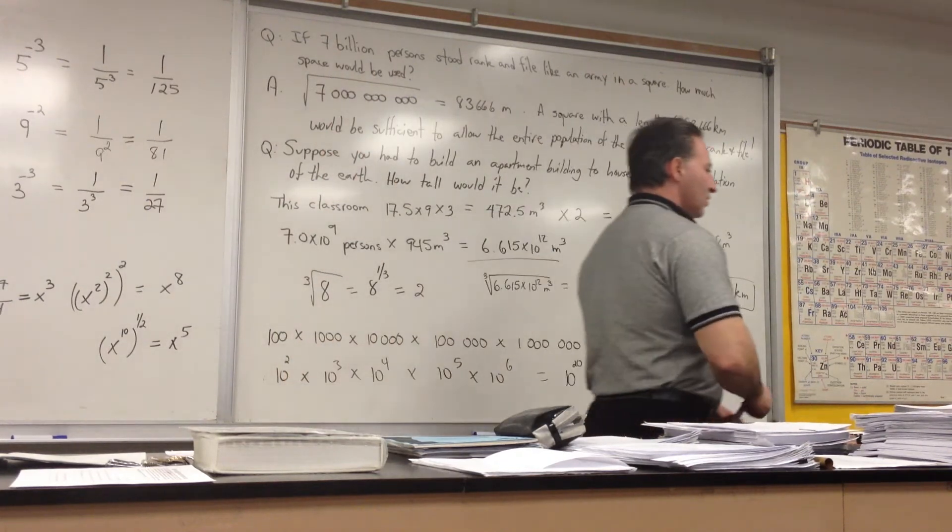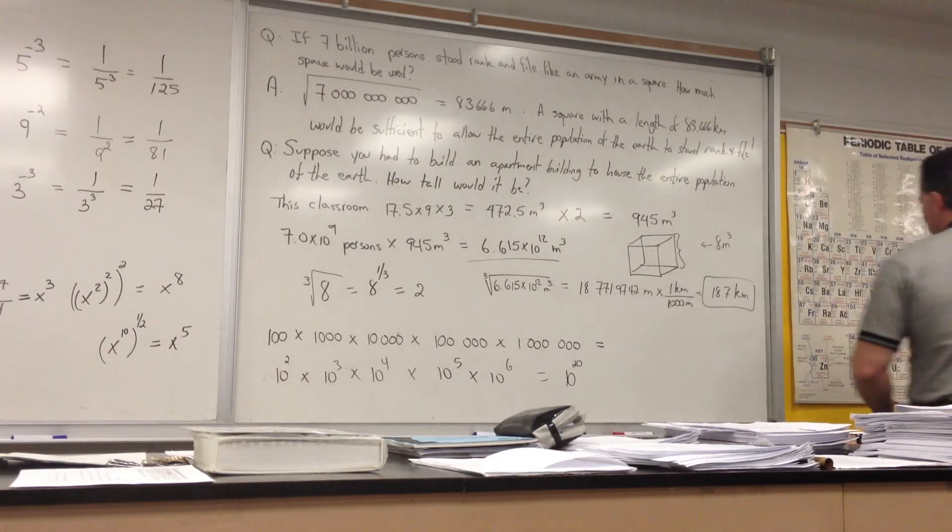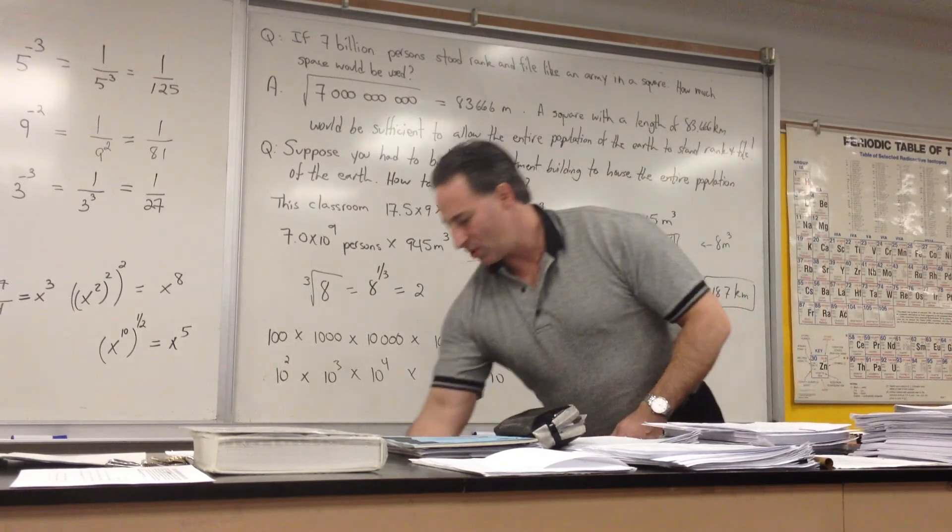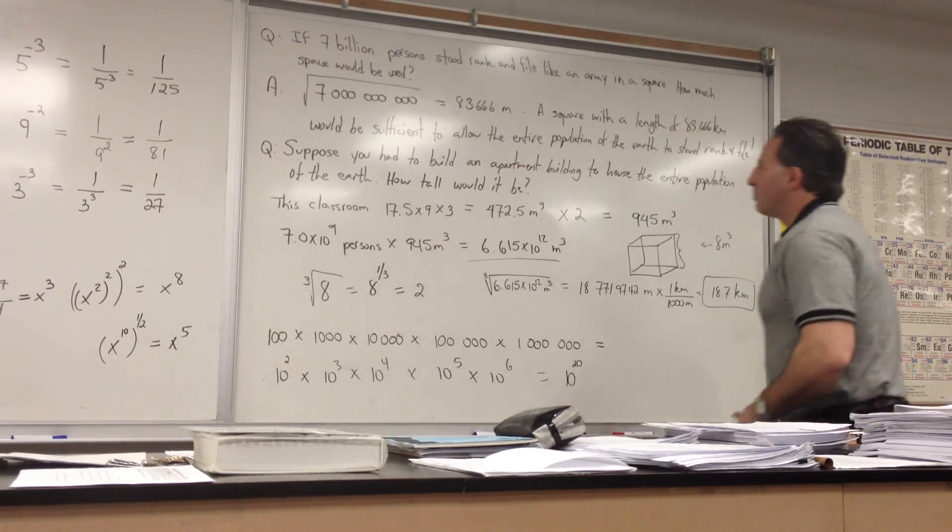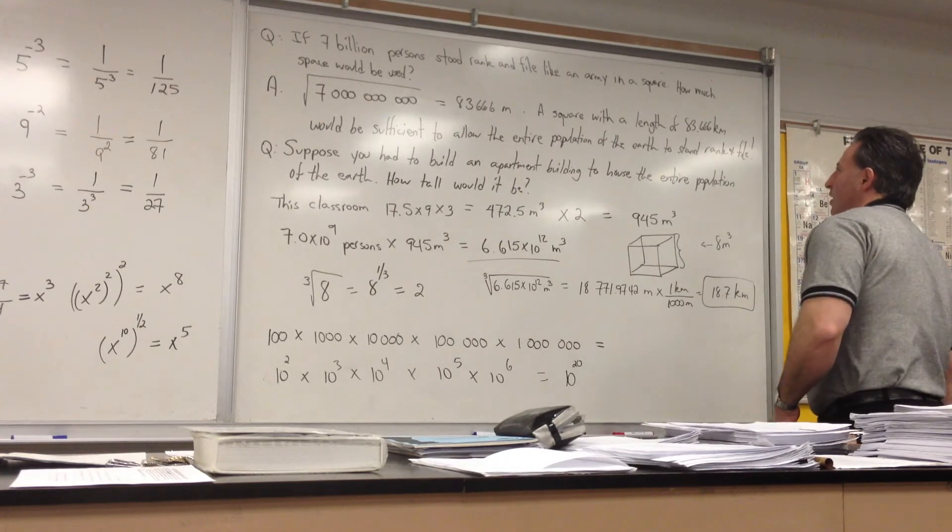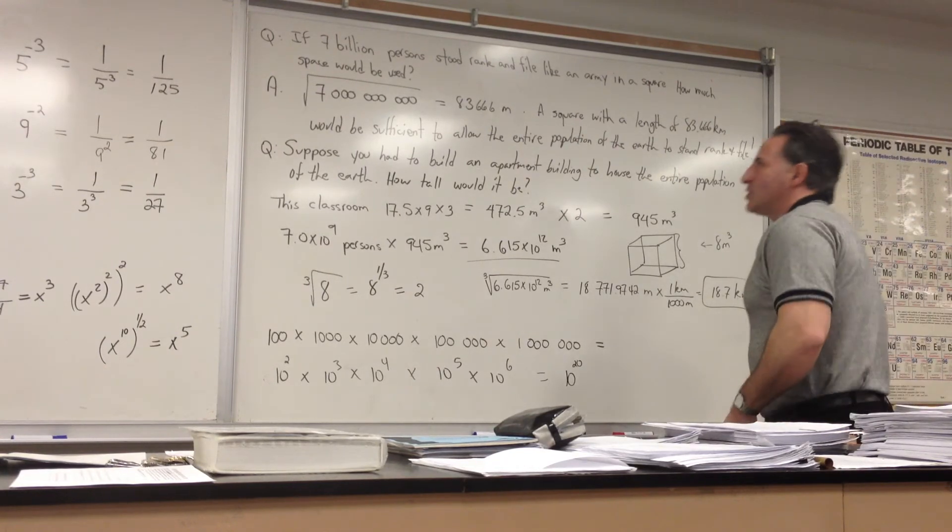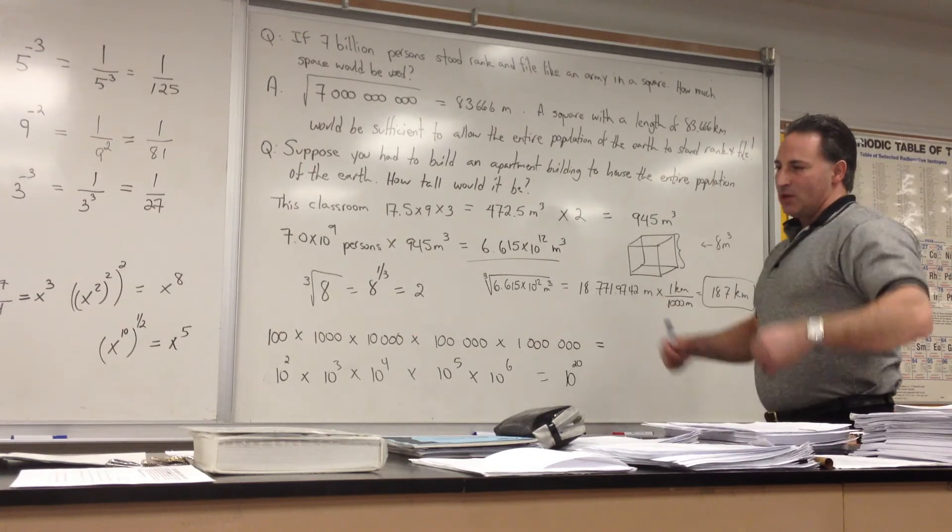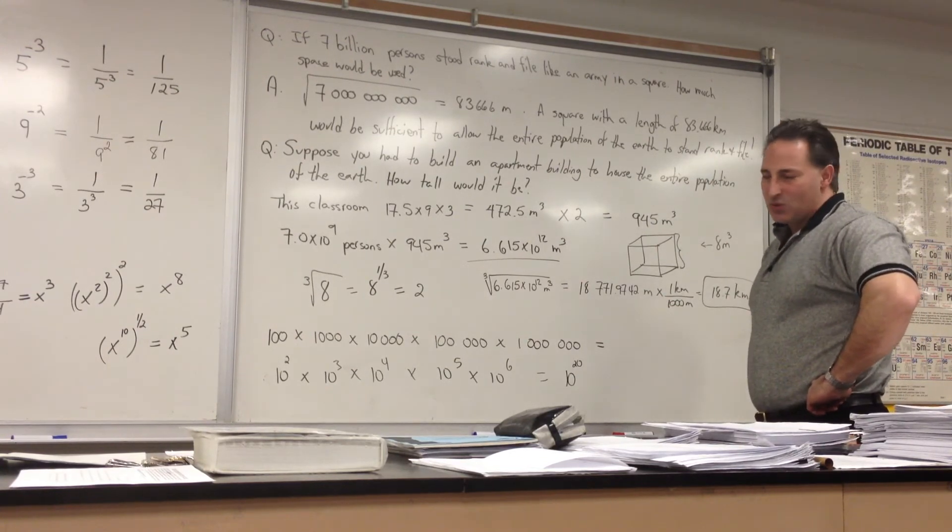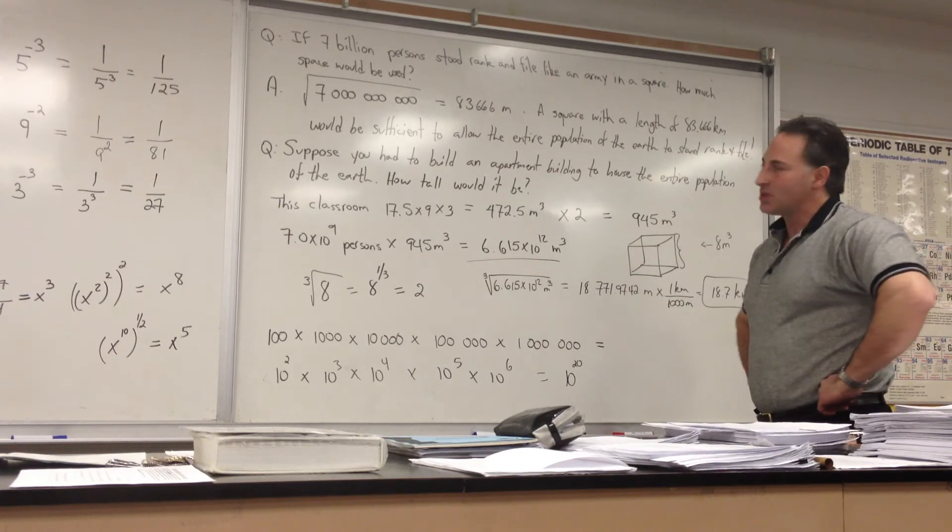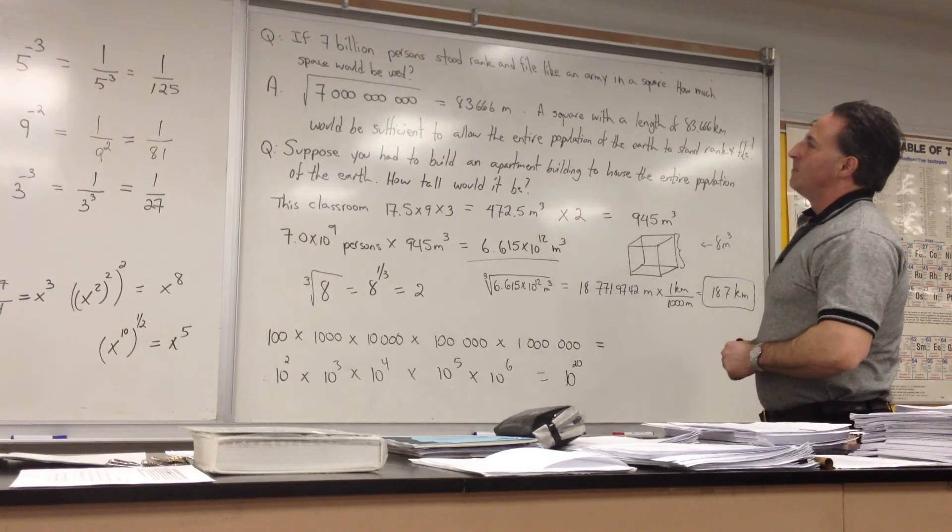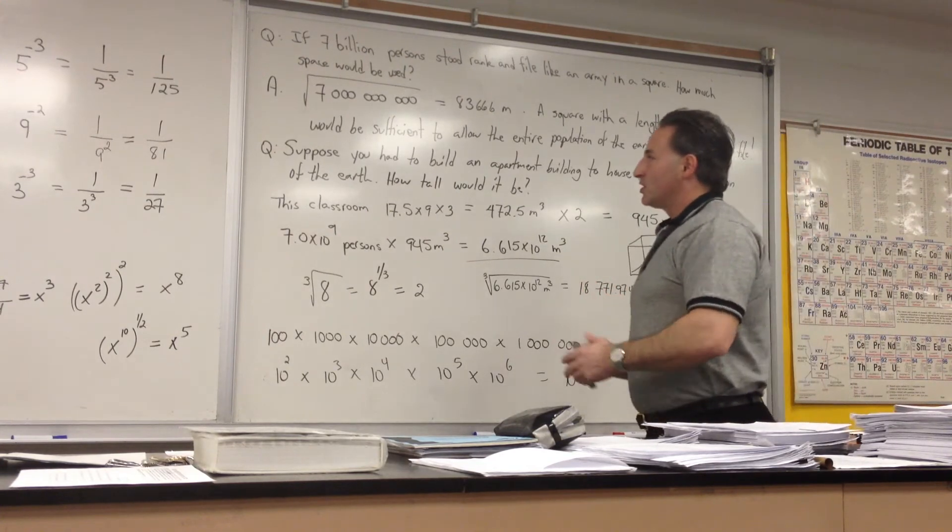Here we can use our newfound skill of working with exponents to do a couple of thought experiments. The first question is, if 7 billion persons stood rank and file like an army in a square, how much space would be used? So each person would have 1 meter square so that you could stand with your hands on your hips and your elbows would be sticking out and they would barely touch the person next to you. And you can imagine all the people standing in rows. 7 billion people is the population of the earth.